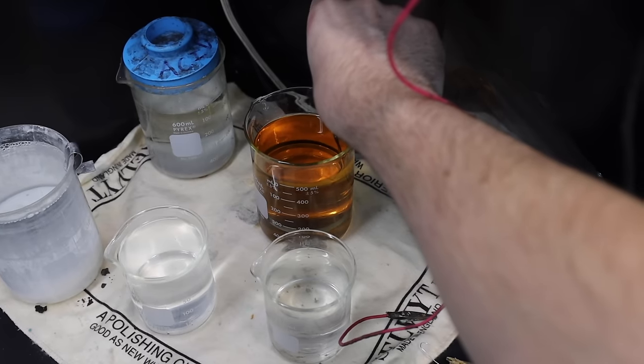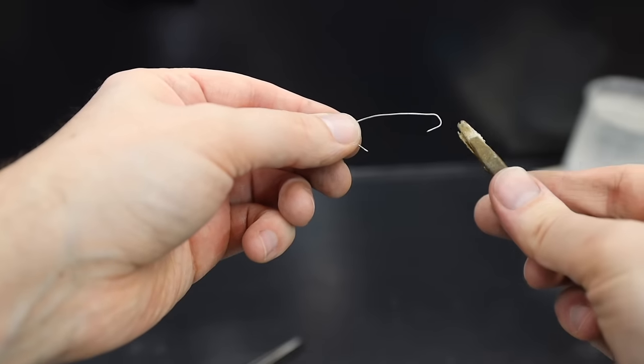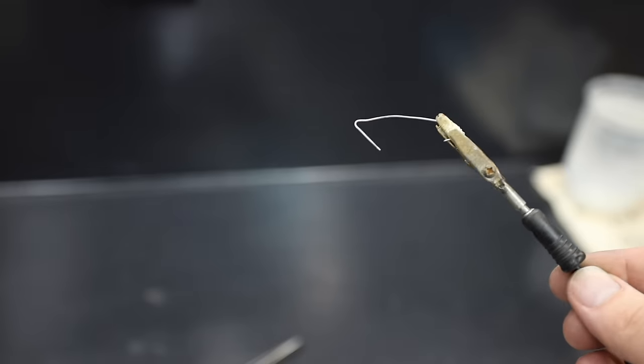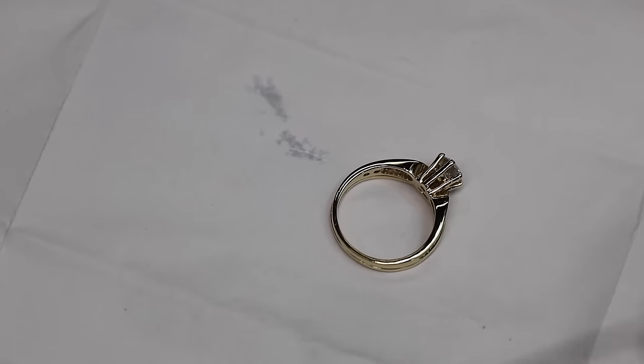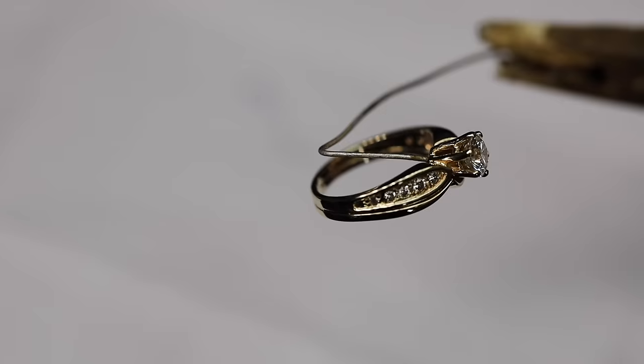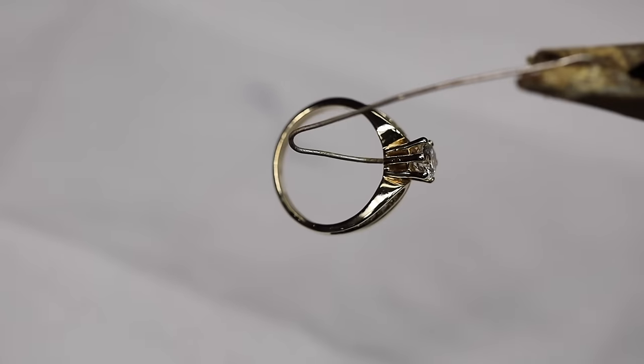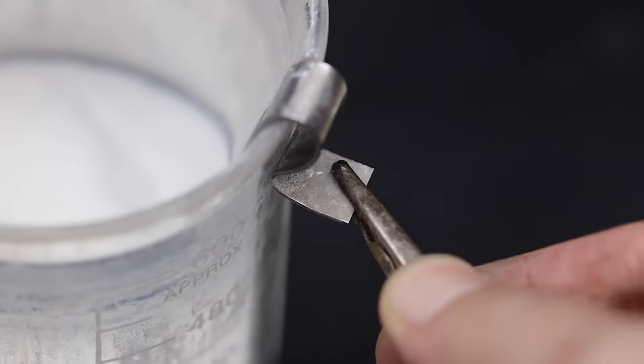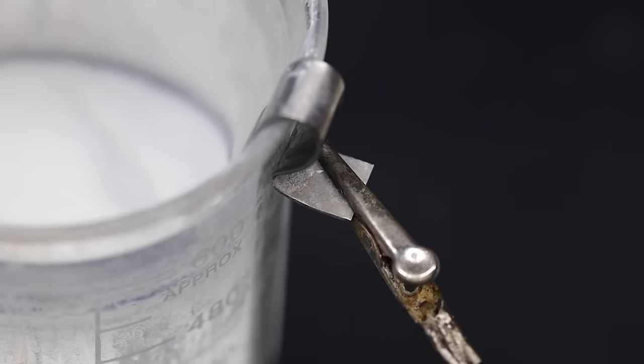We talked about the positive side of the rectifier. This is the negative side, which is attached to a piece of gold wire. This gold wire is then used to attach to the ring. The positive alligator clip is attached to the anode in the electric cleaner.